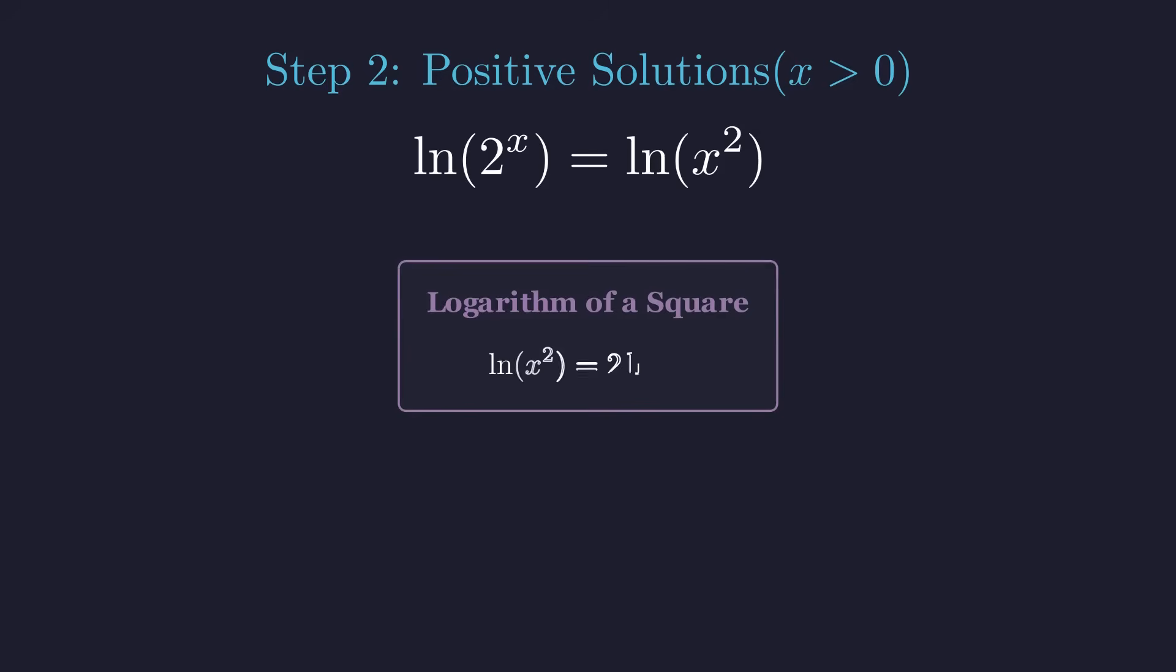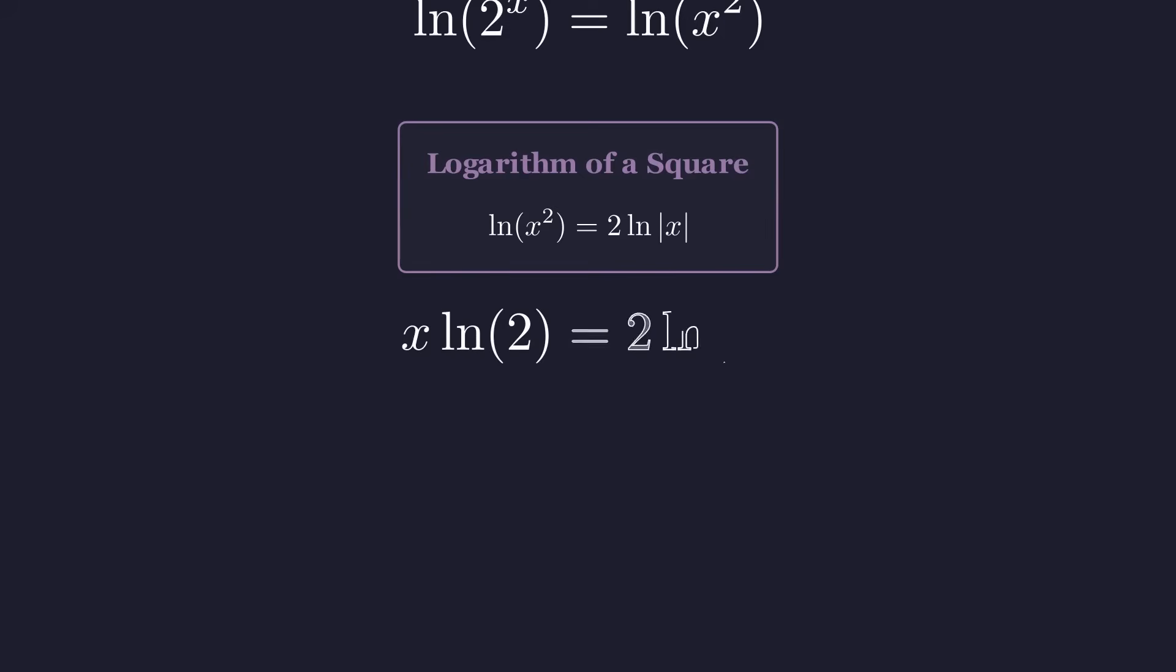Here's a useful logarithm property to keep in mind. The log of x squared equals 2 times the log of the absolute value of x. But since we're working in the positive domain, we don't need to worry about absolute values. Using the power rule for logarithms on both sides, we can pull those variables out of the exponents, which is exactly what we want. Now, to get a clearer picture of what's happening, let's rearrange things. We'll divide both sides by 2x to isolate the logarithmic part. This rearrangement reveals something elegant.